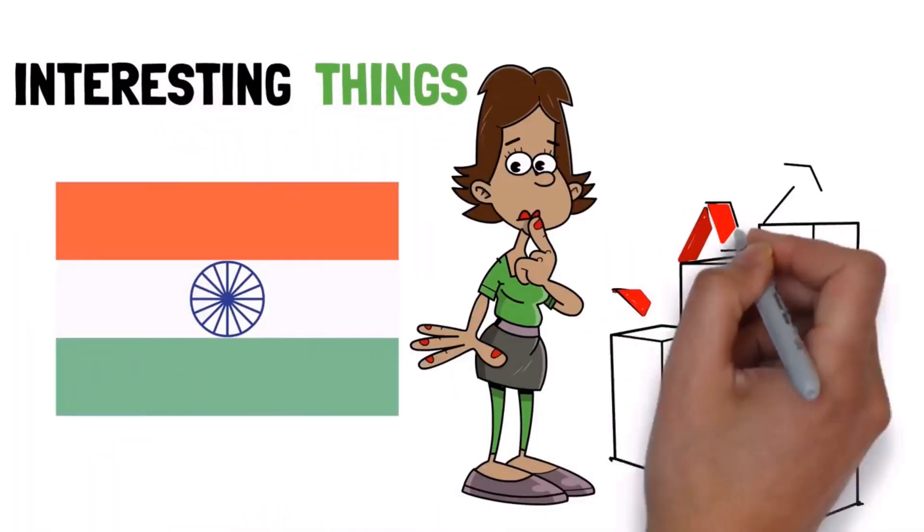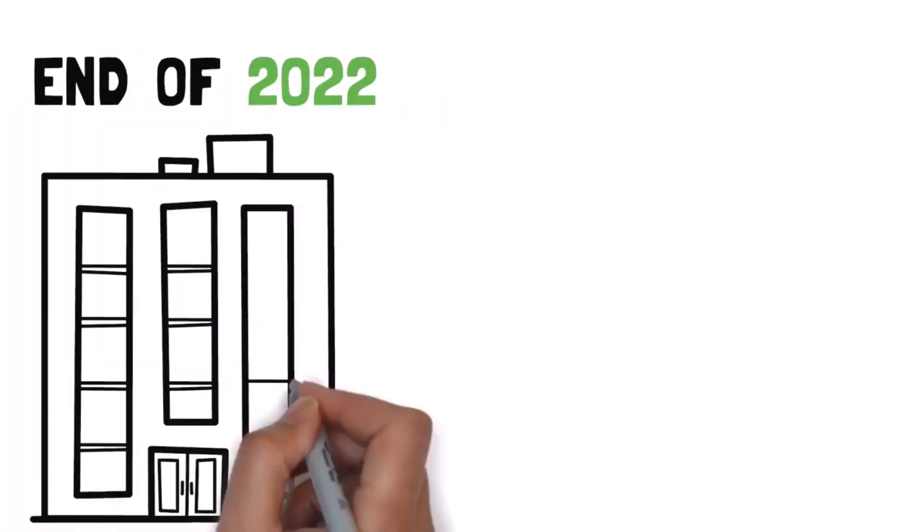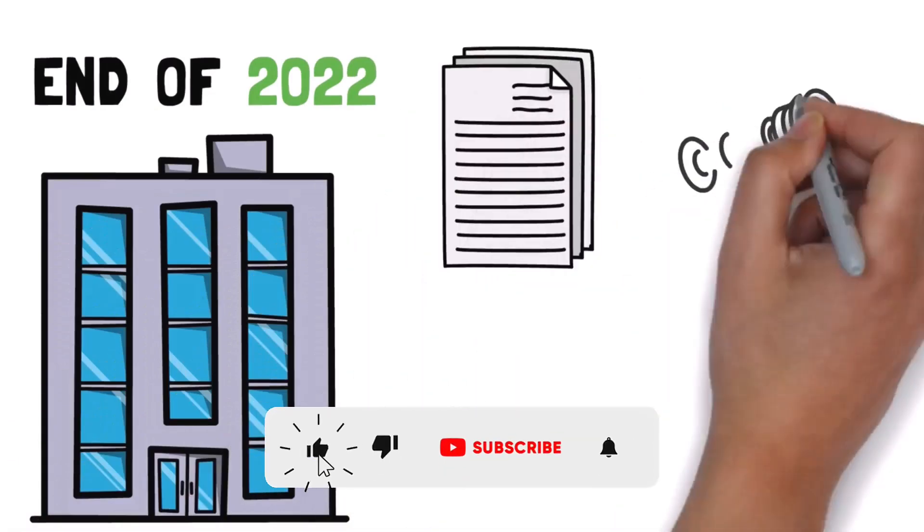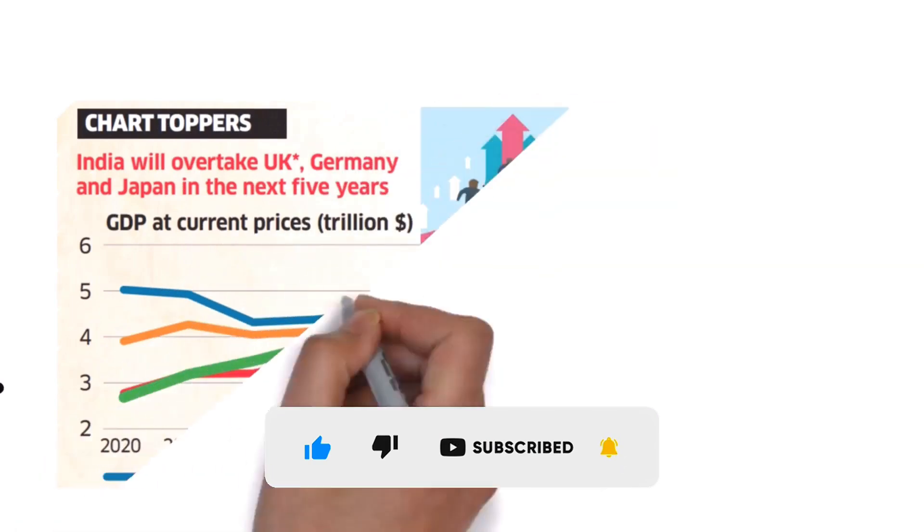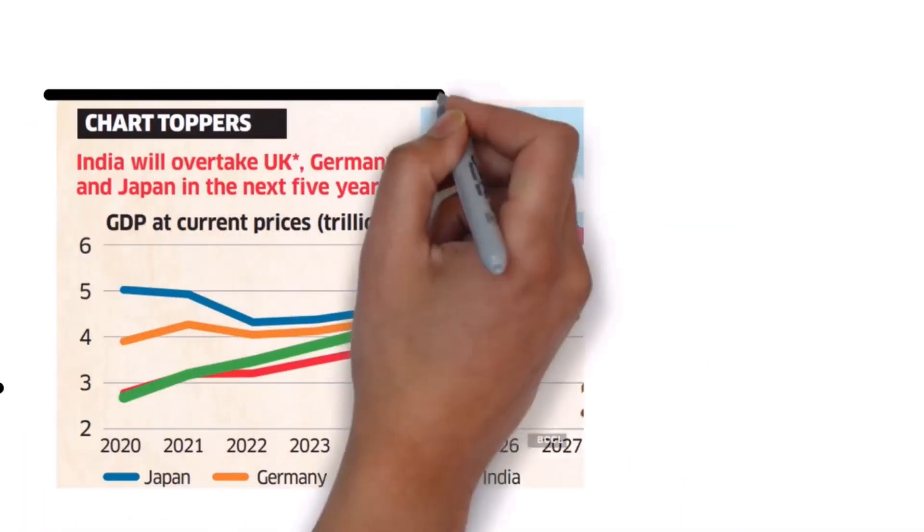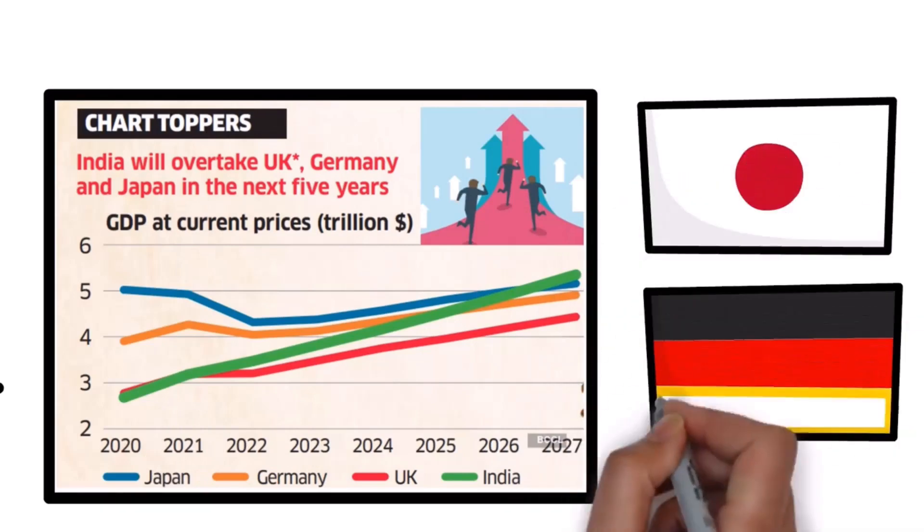But there are a couple of other interesting things about India that you might not have known. Its economy is set for explosive growth this coming decade. At the end of 2022, Morgan Stanley published a research paper on future investment opportunities. And in the paper, they wrote that India is on track to become the world's third-largest economy by 2027, surpassing both Japan and Germany.